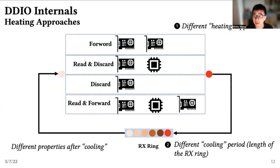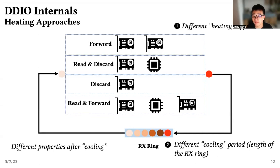We could control the heating approach by controlling how incoming packets are handled. For example, if we forward the packet without reading the content, the buffer is written and read by the NIC only. If we update the packet header during forwarding, the buffer is first written by the NIC, then the processor, then read by the NIC again. We may also tune the length of the RX ring, so buffers may cool down for shorter or longer. We could compare buffer properties after cooling, such as the hit rate of the NIC write, to investigate cache behavior.